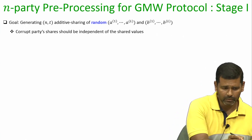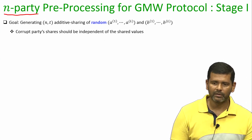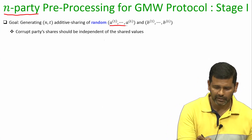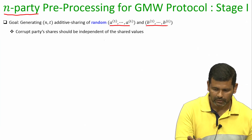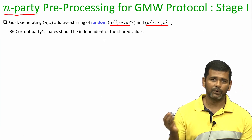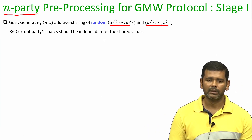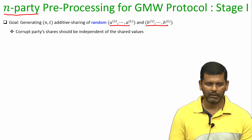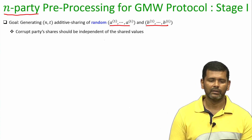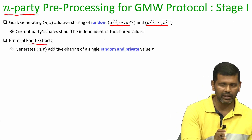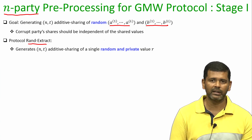For the n-party case our goal is again divided into two stages. In stage one we have to generate additive secret sharing for the bits A1 to AL and B1 to BL, where those bits should be uniformly random and every party should have a bit share, such that the corrupt parties' shares do not reveal anything about the underlying shared bits. This can be done by extending the randomness extraction procedure from the last lecture to the n-party case.